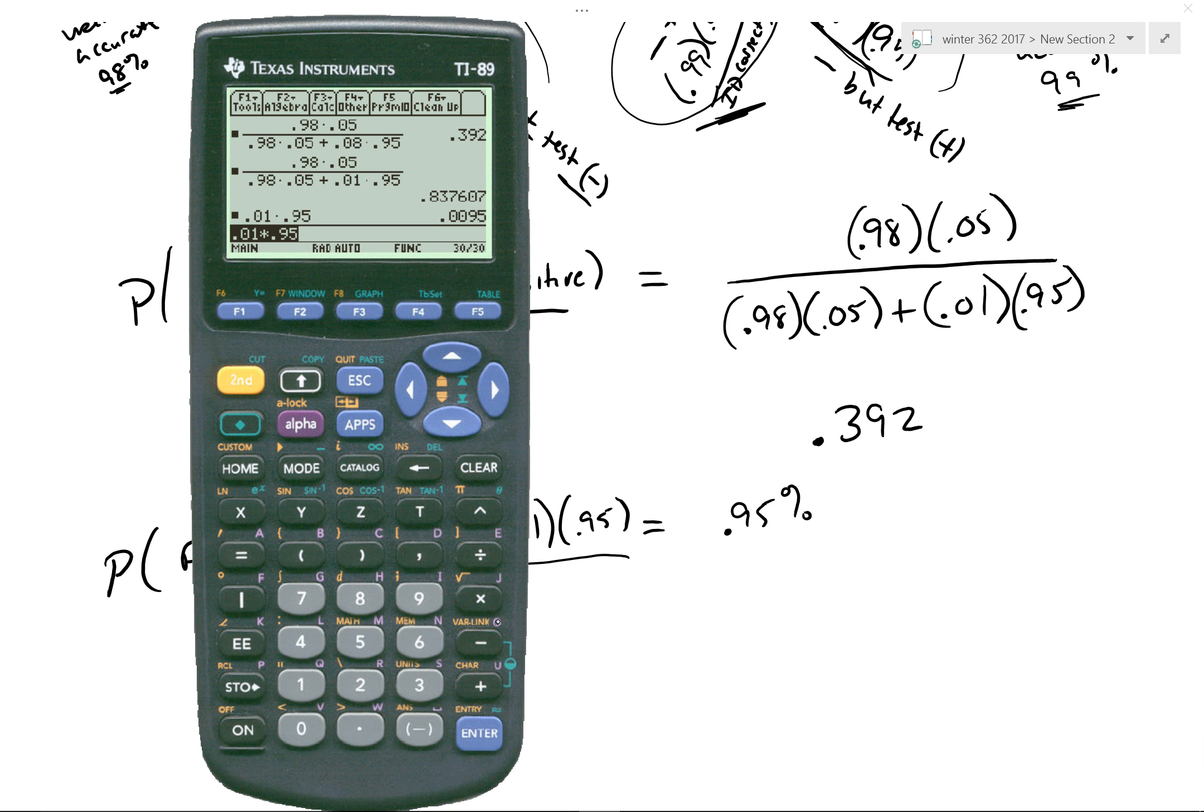So it'd just be, you know, times it again. So the chance that it would happen would be something like 0.009% chance that you would get two false positives in a row.